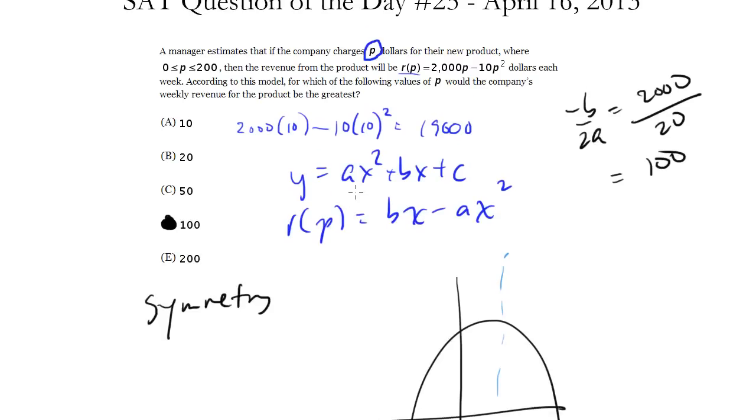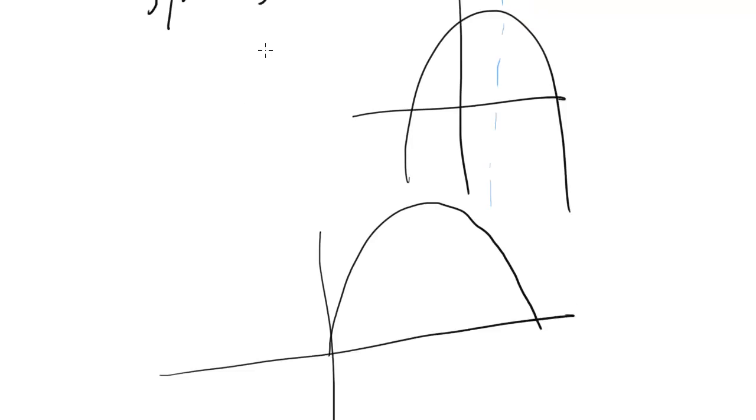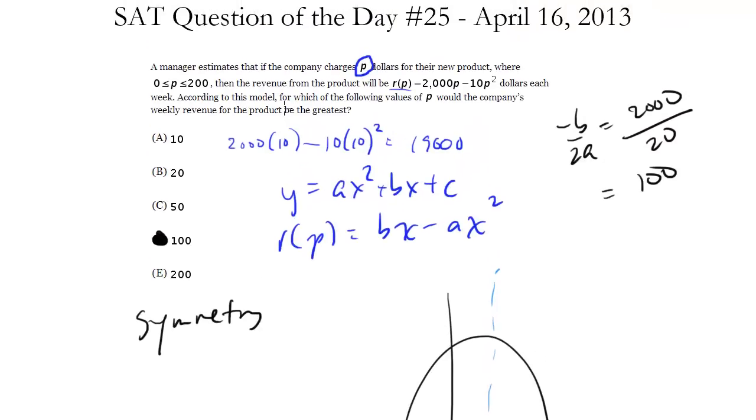Notice this parabola is going to start at (0, 0), at the origin, because if I plug in 0 for P I get 0 for R. So it's going to look something like this. And same thing if I plug in 200 within this range, I also get 0.